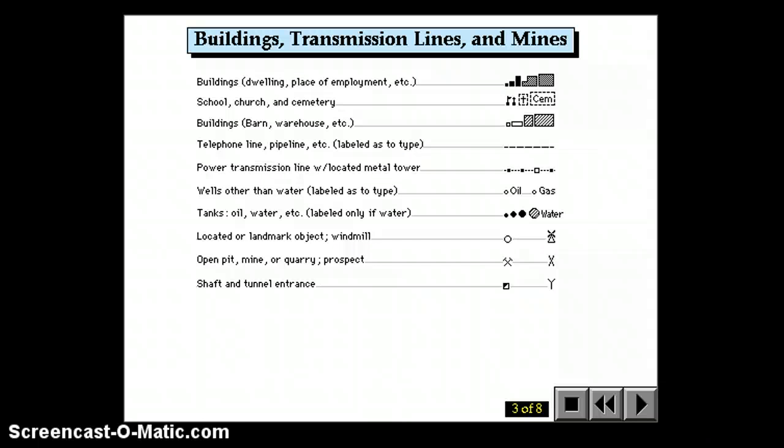Buildings, transmission lines, and mines all have specific symbols. If buildings are colored in, that means people live in them. If they are just an outline, that means they're like a barn. Churches and schools have specific flags or crosses on top of them.